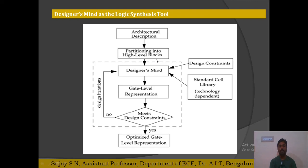Once the high level description is converted into gate level representation, you need to check whether it meets the design constraints — whether it meets the area, timing, and power constraints. If it does not meet the constraints, the designer goes back and writes an optimized gate level representation and redesigns the gate level structure for the same high level design block.